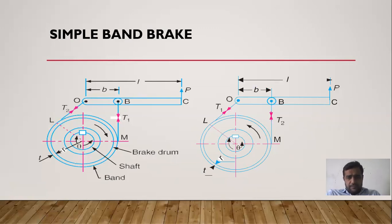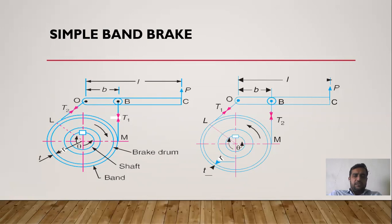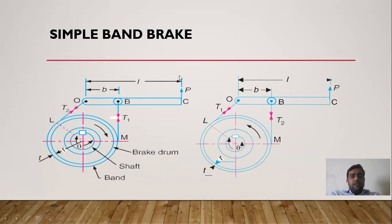We use simple band brakes because, with shoe brakes, when the drum is rotating at speeds above 350 to 600 rpm, the shoe brake is not sufficiently efficient. So at those higher speeds, we use the simple band brake arrangement.